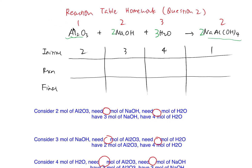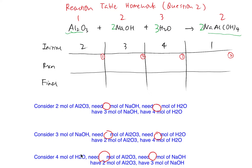We need one proportion of aluminium oxide, two proportion of sodium hydroxide, three proportion of water, and altogether you form two pieces of sodium aluminium hydroxide. In our reaction column, everything follows the stoichiometry ratio which is 1, 2, 3, 2. The next step is to decide the limiting reagent. Because there are three substances, we need to consider them three times — consider what we initially have and calculate how much we need to form a perfect reaction.